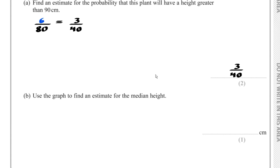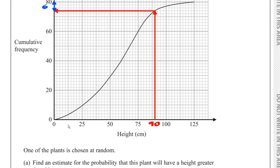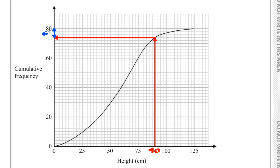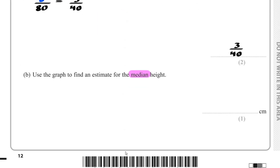Part B: Use the graph to find an estimate for the median height. Half of 80 is 40, so drawing a line from 40 on the cumulative frequency axis and reading down gives a median of 60 cm.